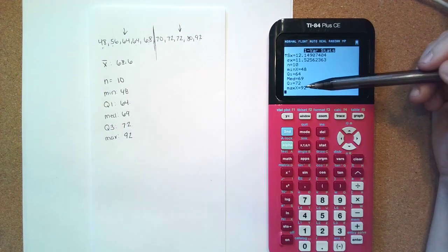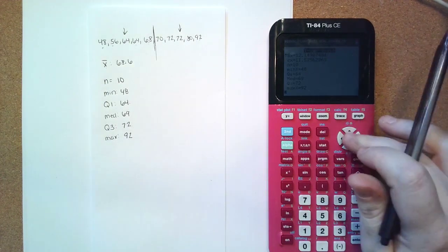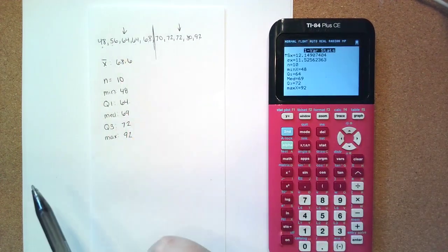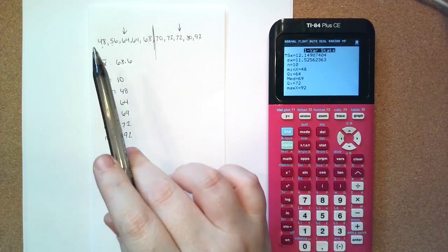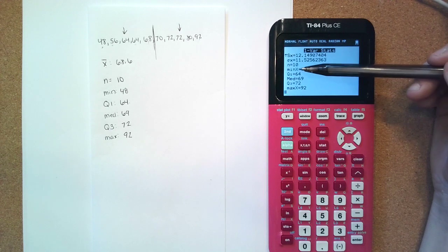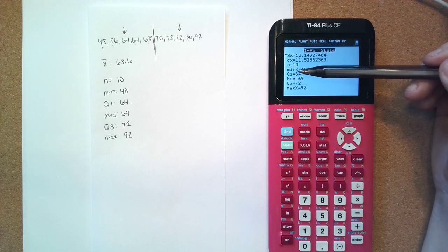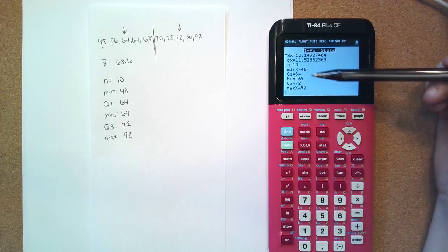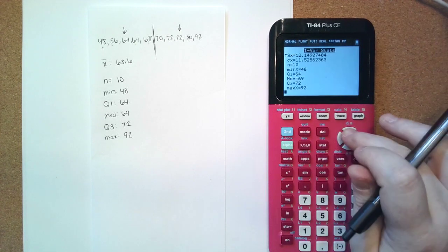So this is how we find our five number summary on the calculator versus having to do it by hand, especially if we have a very large set of numbers. This is very simple in the calculator and it gives it to you exactly as you need it. So these are your five numbers. It tells you multiple information.